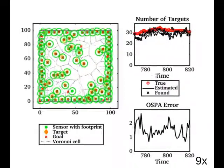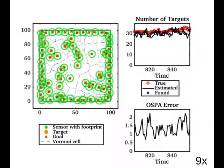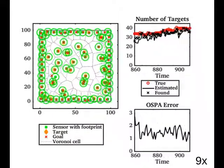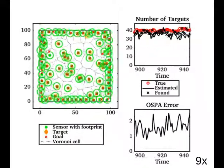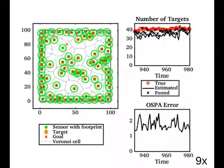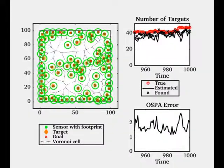The figure in the lower right shows the optimal sub-pattern assignment error between the extracted target set and the true target set. This measures the average error in the location of each target, with a penalty of 10 meters for each missing or extraneous target.